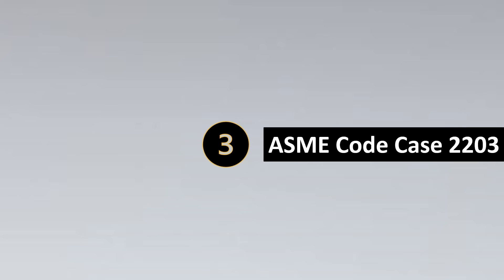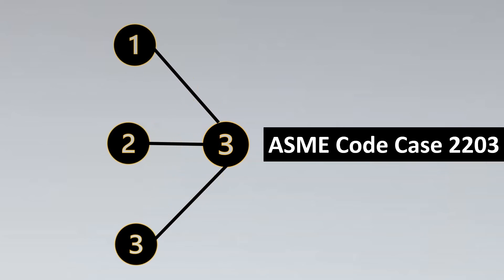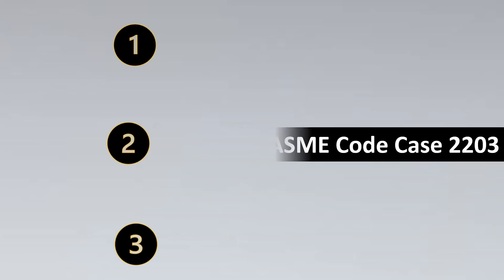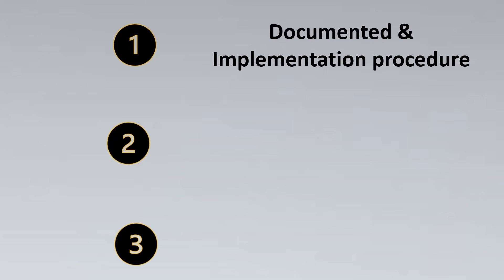The most important question of all: what is ASME code case 2203? This code case 2203 is specially used when you don't want to use a lever in such cases. It has a 3-step procedure that we need to follow. The first condition is that a documented procedure for testing of the relief valve should be done. Since the basic purpose of a relief valve lever is to do periodic testing, if you are not using a lever, you must have a strong documented procedure for how you are going to check the relief valve — and it should be an implemented procedure, not just a document.